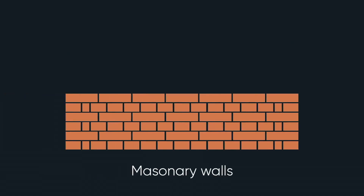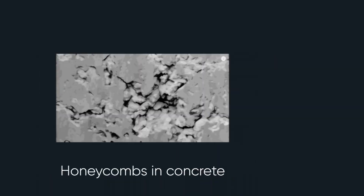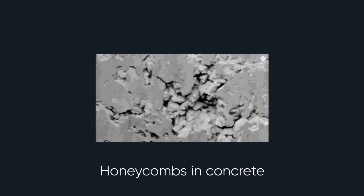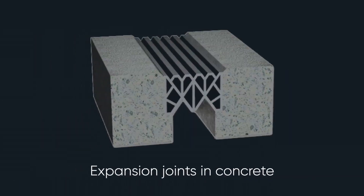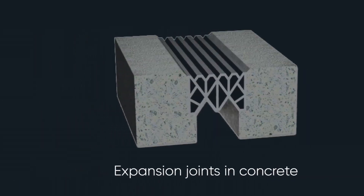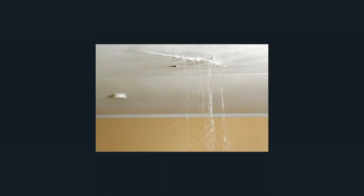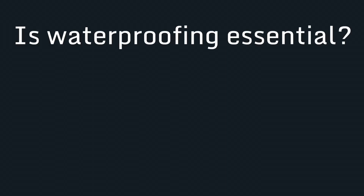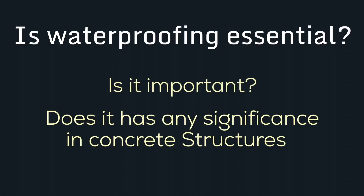Waterproofing leakages can happen at a lot of places — your masonry walls, concrete cold joints, honeycombs in concrete, old-to-new structure joints, expansion joints in concrete, external masonry cracks — there are many places where you can see water seepages and water leakages happening. So is waterproofing essential and important for concrete structures?